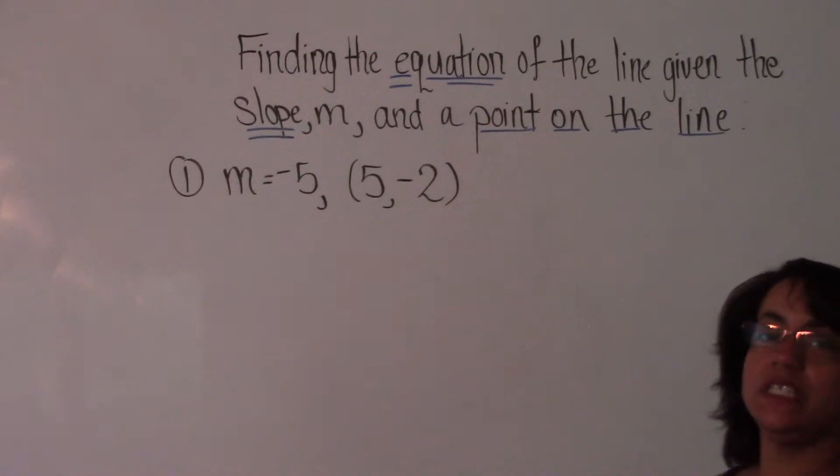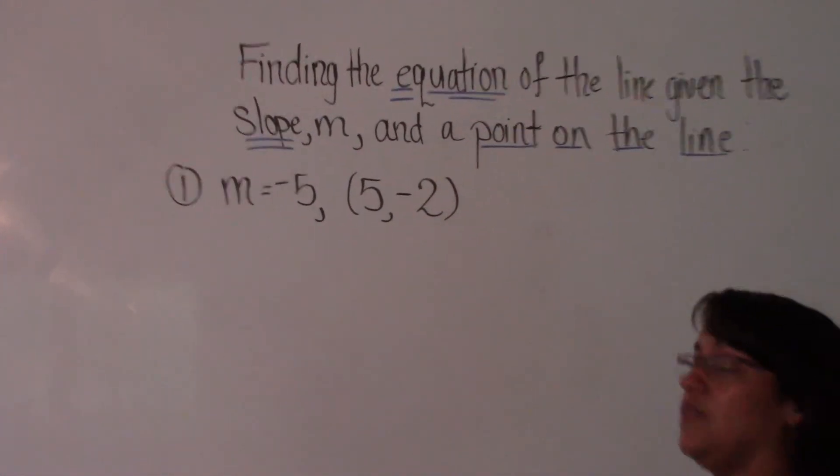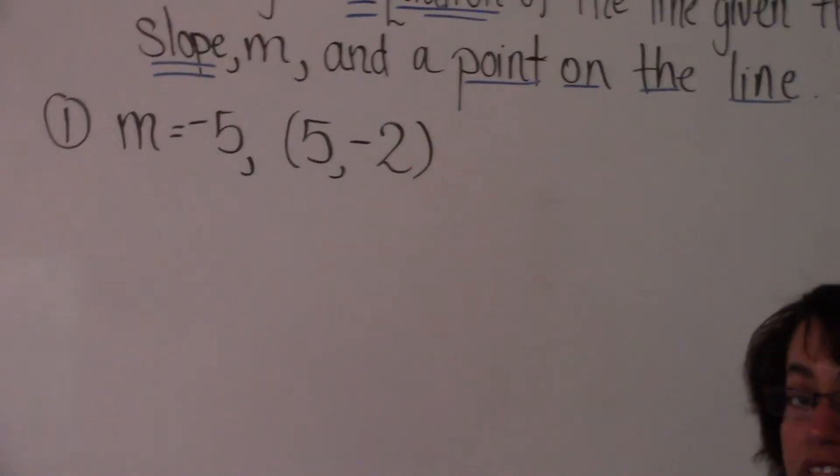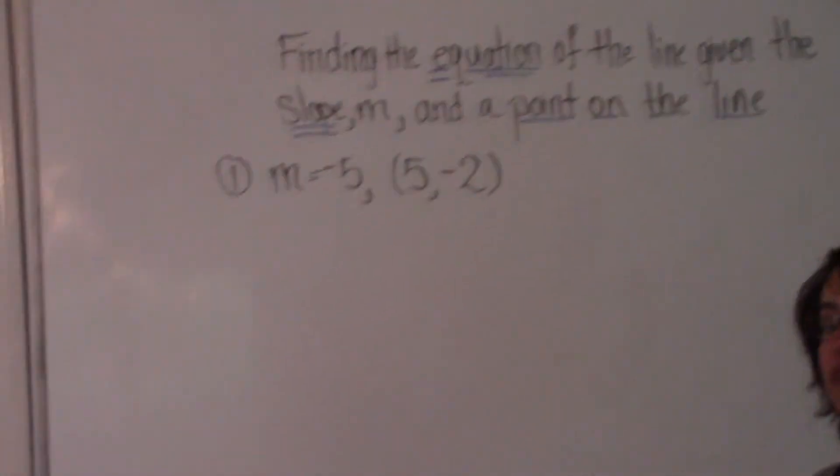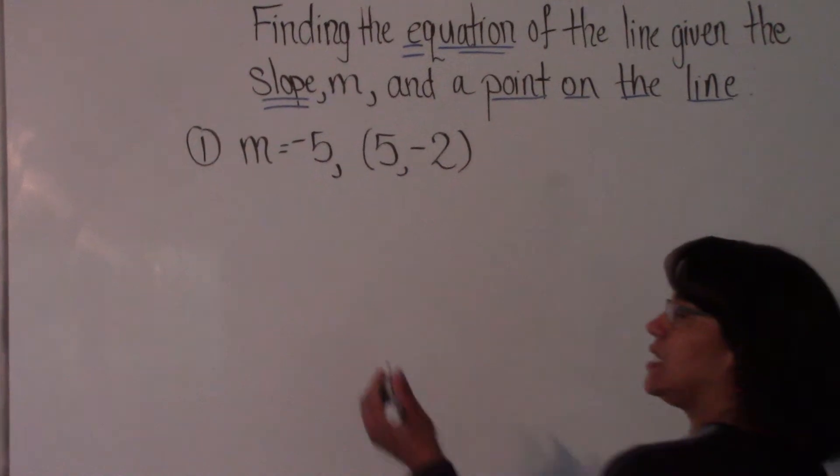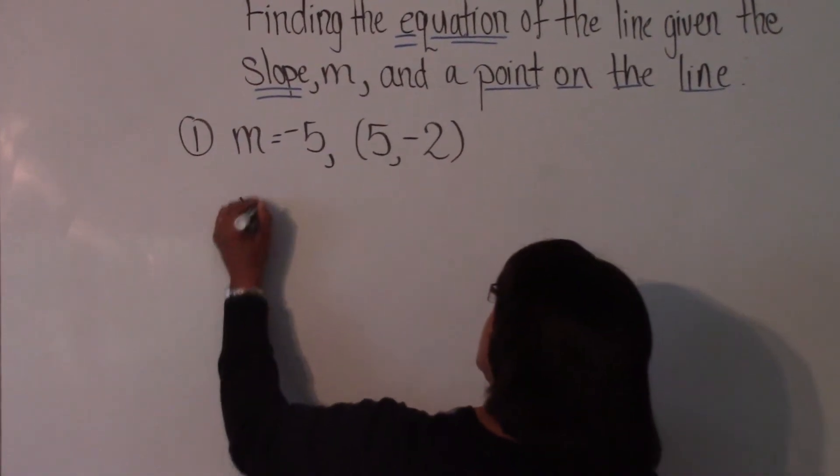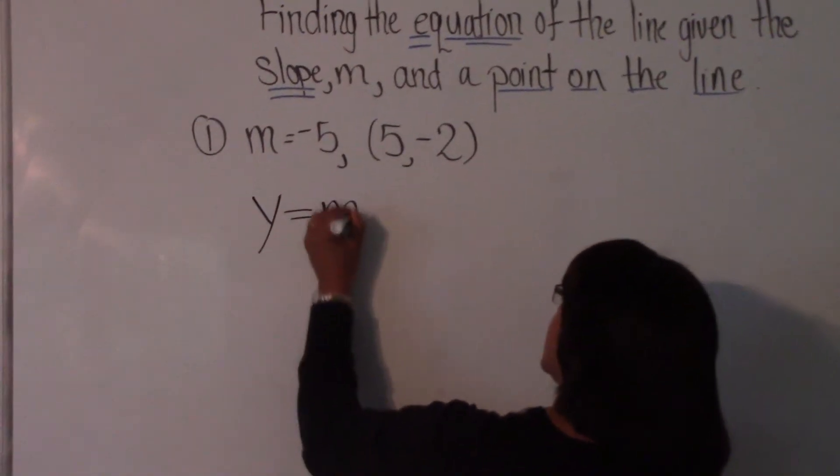Today we're going to learn how to find the equation of a line using the slope of the line and a point on the line. We're going to use slope-intercept form to do this. Slope-intercept form is y equals mx plus b.